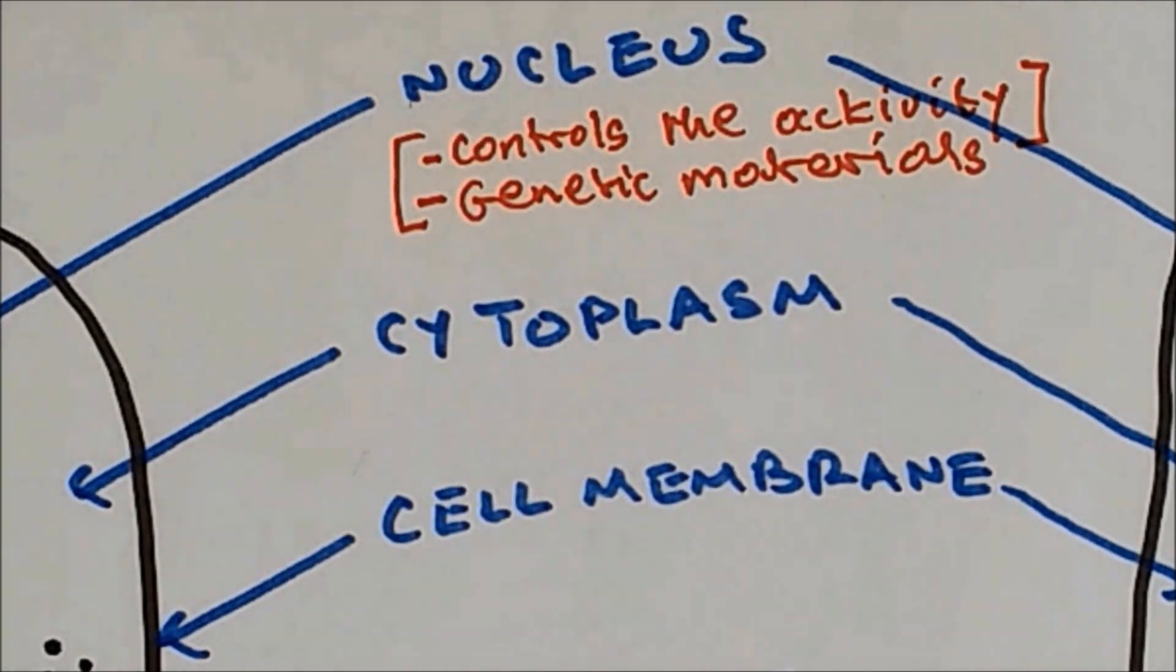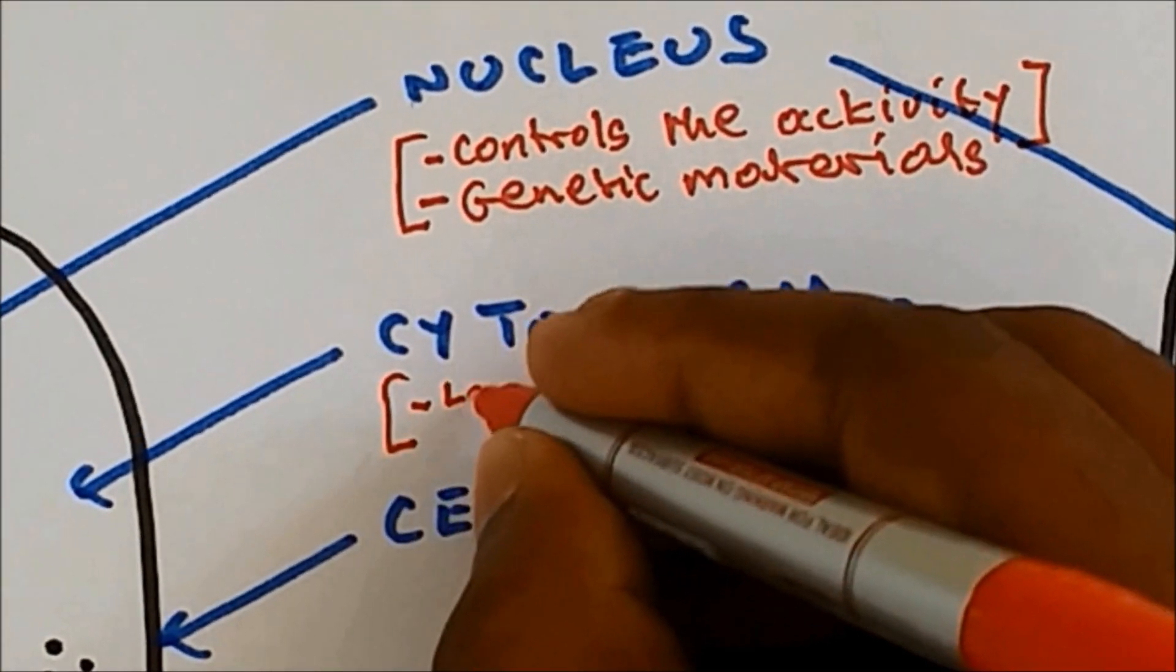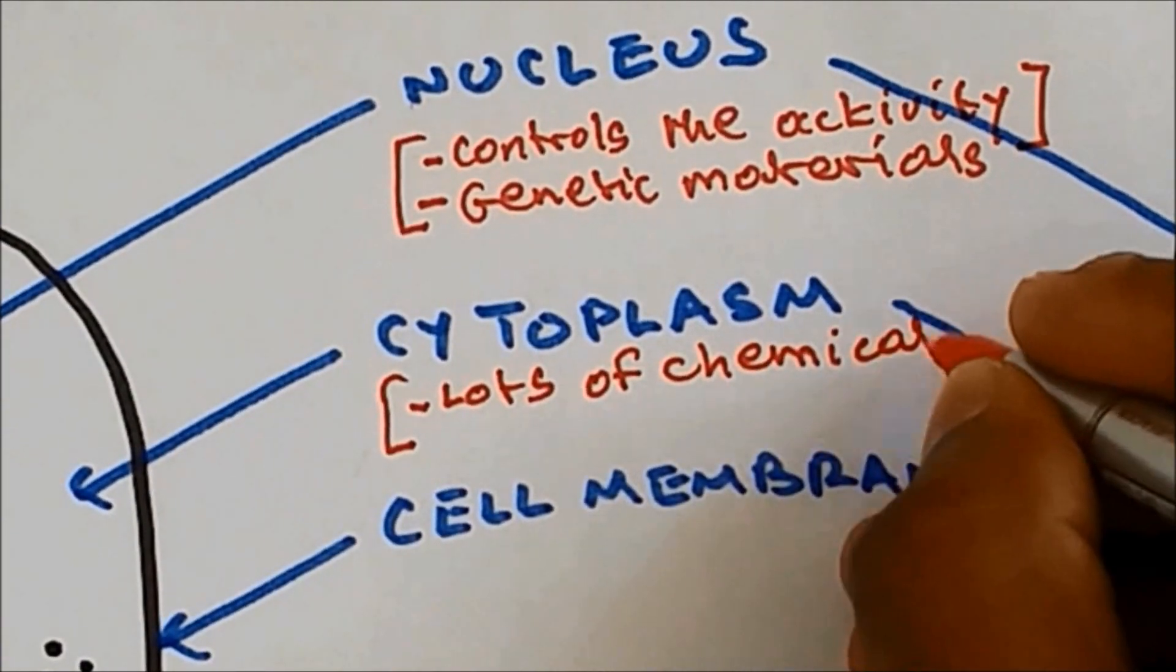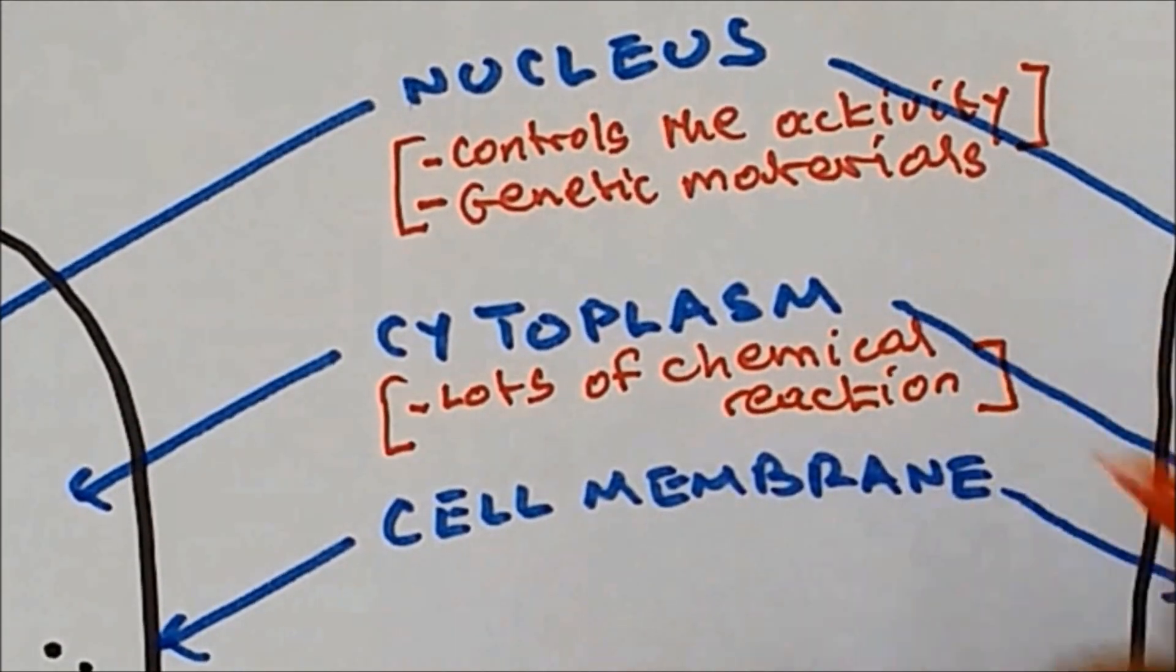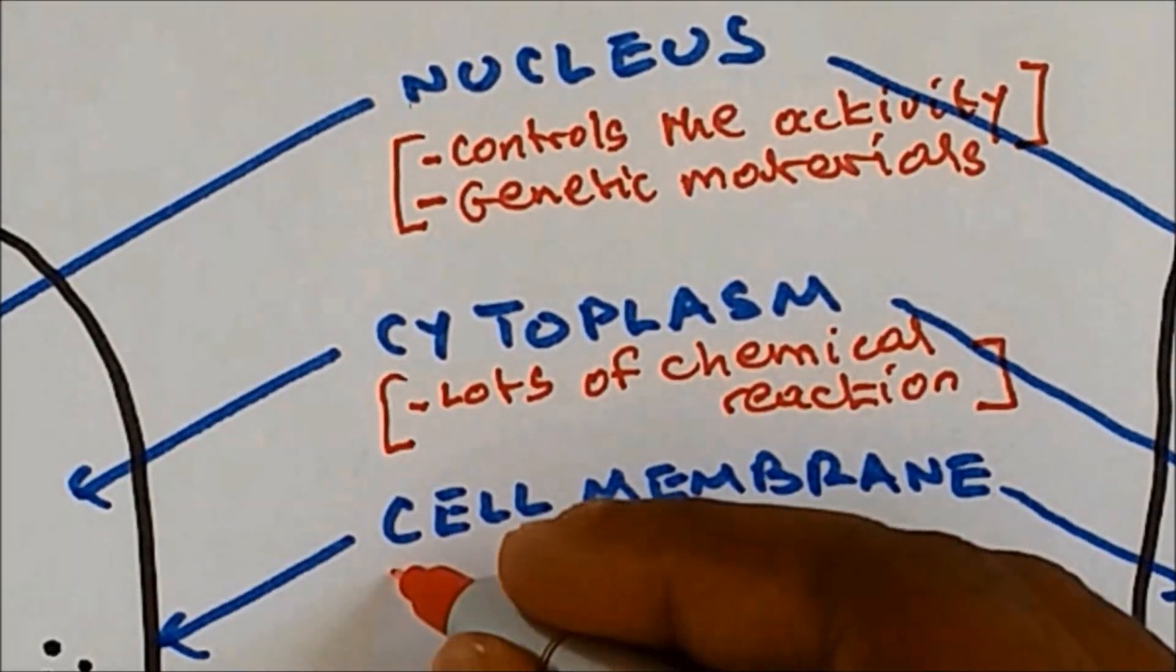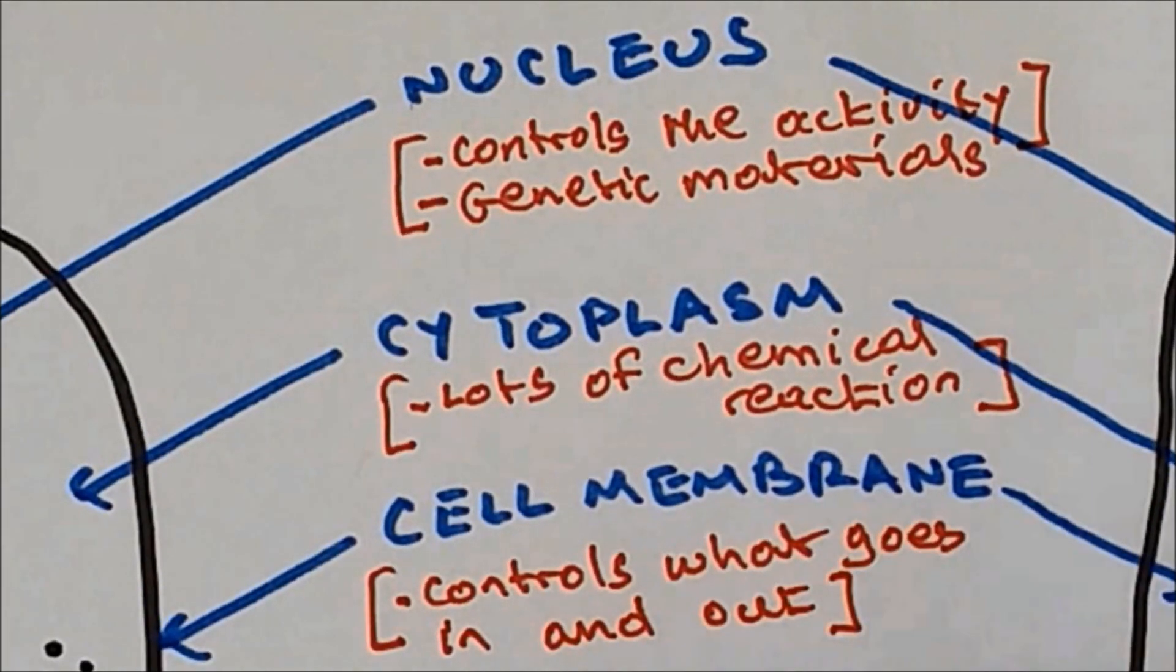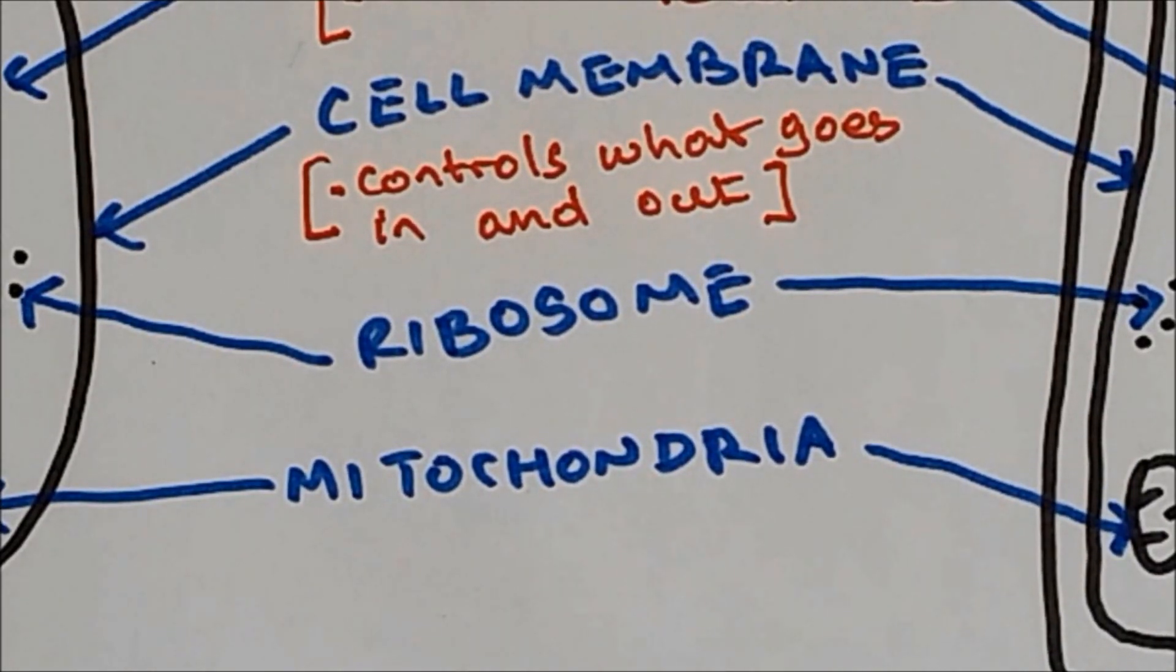Now cytoplasm. Cytoplasm is a jelly-like substance where lots of chemical reactions take place. The cell membrane is more like a guard. What it does, it controls what goes in and out. Ribosomes, these black dots, they are involved in protein synthesis.